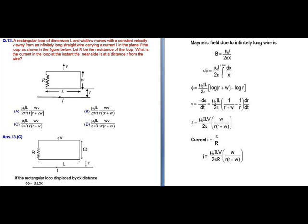To calculate the current, we use current = EMF / resistance R. So we get current = (μ₀ILVw) / (2π × R × r × (r+w)). The correct answer here is option C.